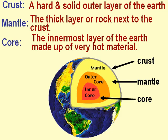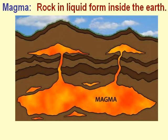Mantle is the thick layer of rock next to the crust. Core is the innermost layer of the earth made up of very hot material. Magma is the rock in liquid form inside the earth.